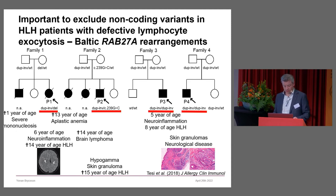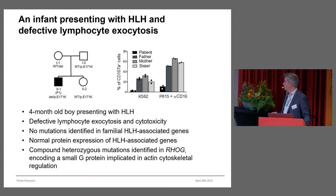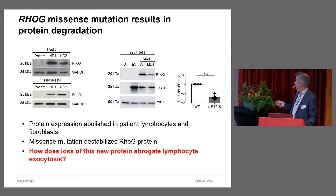Looking at this Finnish patient, we found normal expression of all known HLH genes, but genetics uncovered a compound heterozygous mutation in RhoG, which encodes a small G-protein implicated in actin cytoskeletal regulation. This mutation: one is a larger deletion, and the second is a missense mutation that reduces protein stability.